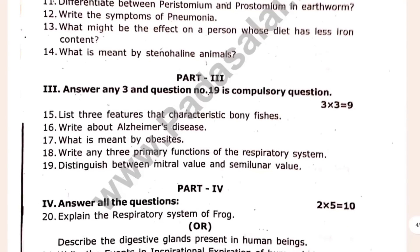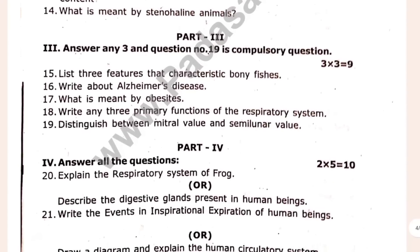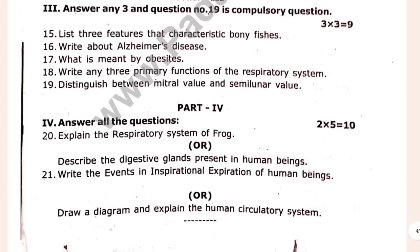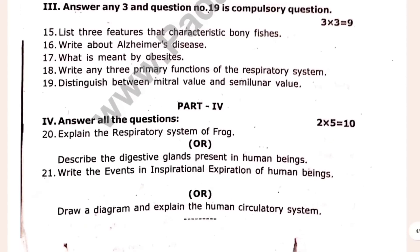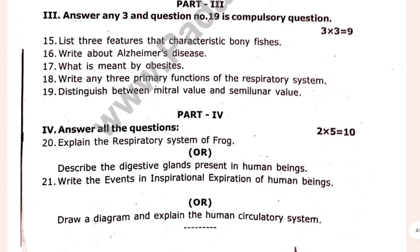We can see the difference between the five marks, 2 marks, 1 mark questions. Explain the respiratory system of frogs. Describe the digestive glands present in human beings. Write the events in the inspiratory expression of human beings. Draw a diagram to explain the human circulatory system.